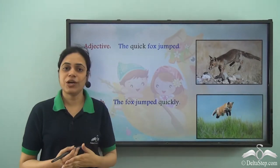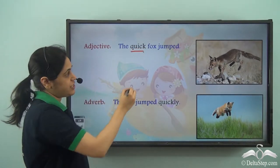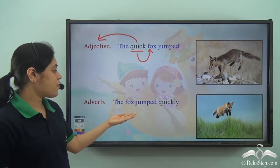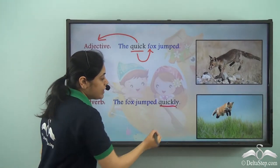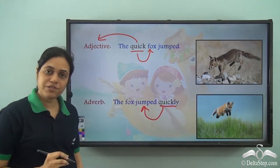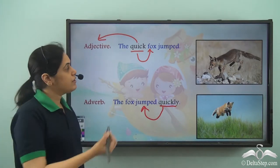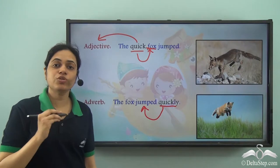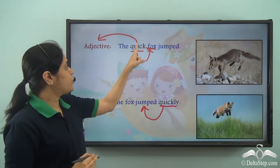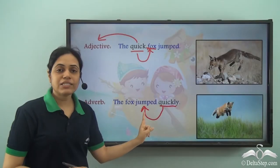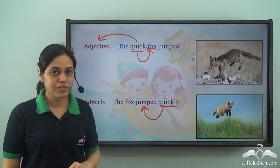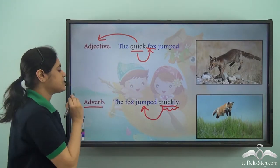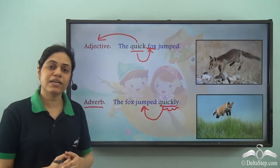Consider: 'The quick fox jumped.' Here quick is an adjective describing the noun fox. Whereas in 'The fox jumped quickly,' quickly is an adverb describing the verb jumped — how did the fox jump? Quickly. In the first sentence we ask the question about the noun fox and get the answer quick, making it an adjective. In the second, we ask how did the fox jump and get quickly — describing a verb, so it is an adverb. Quick is an adjective; quickly is an adverb.